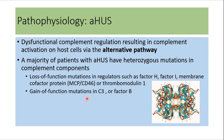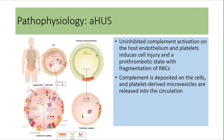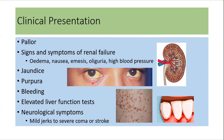In atypical HUS, there is dysfunctional complement regulation resulting in complement activation on host cells via the alternate pathway. The majority of patients with atypical HUS have heterozygous mutations in complement components, which leads to uninhibited complement activation in the host endothelium and platelets, inducing cell injury and a prothrombotic state with fragmentation of RBCs.